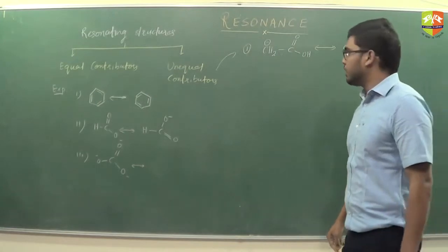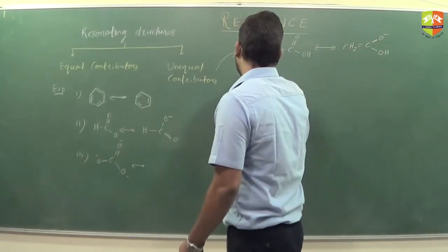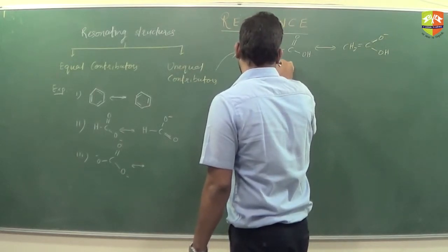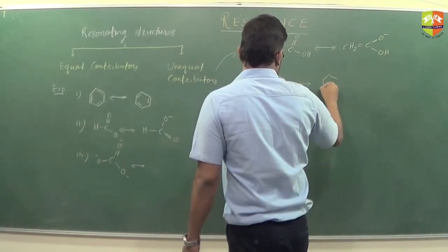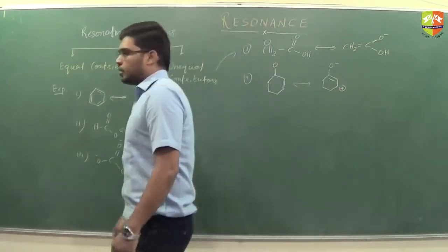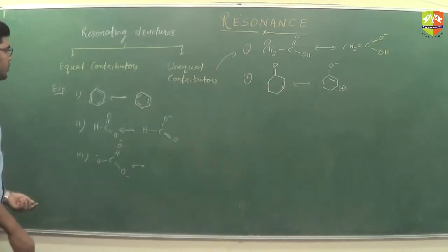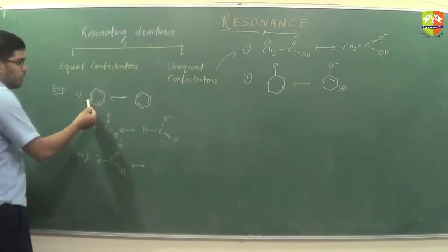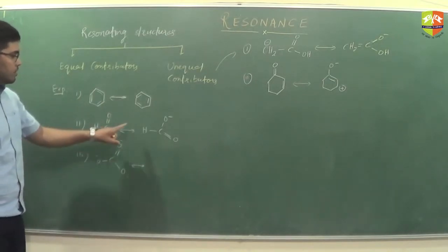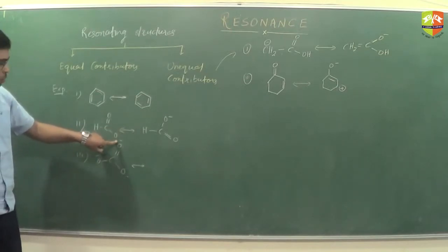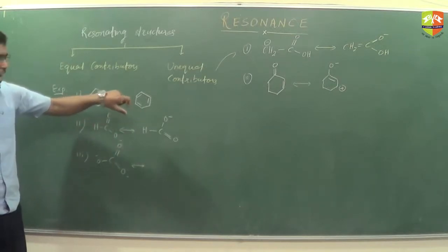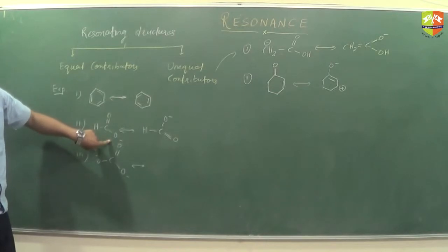So in equal contributors, what happens is the pi electron is distributed uniformly throughout the molecule. If you draw the actual hybrid structure of this, one negative charge is equally distributed on both oxygen atoms. So the charge on each oxygen in the hybrid structure will be minus one-half and minus one-half.